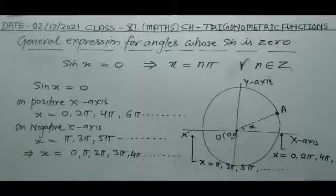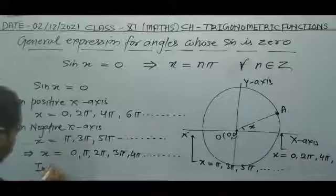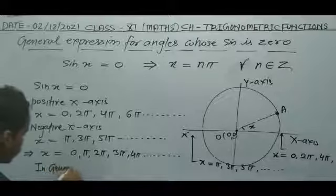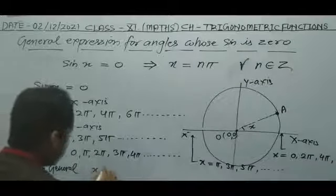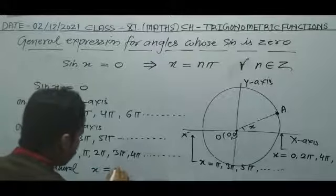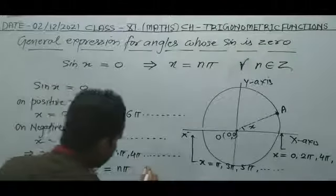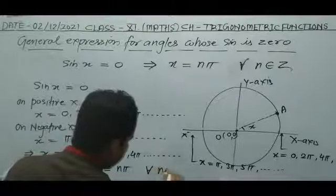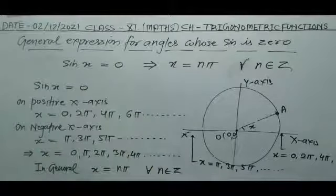In general form, we can write x is equal to nπ, for all n belonging to integers.